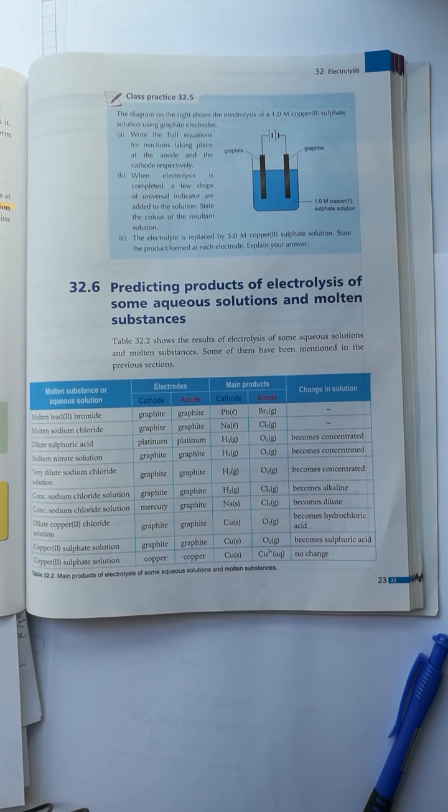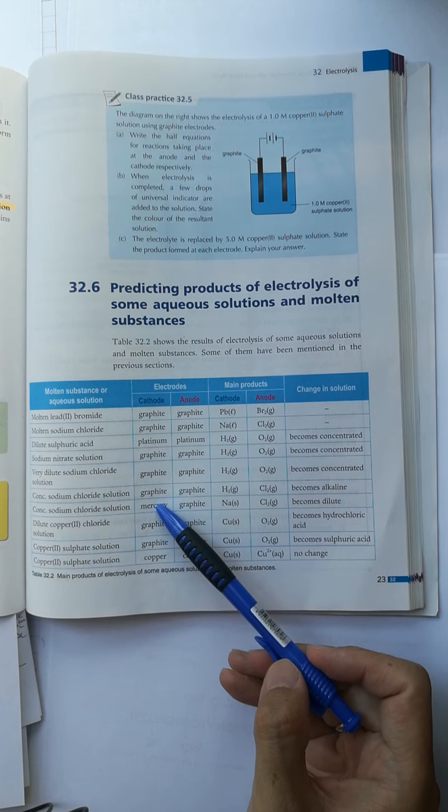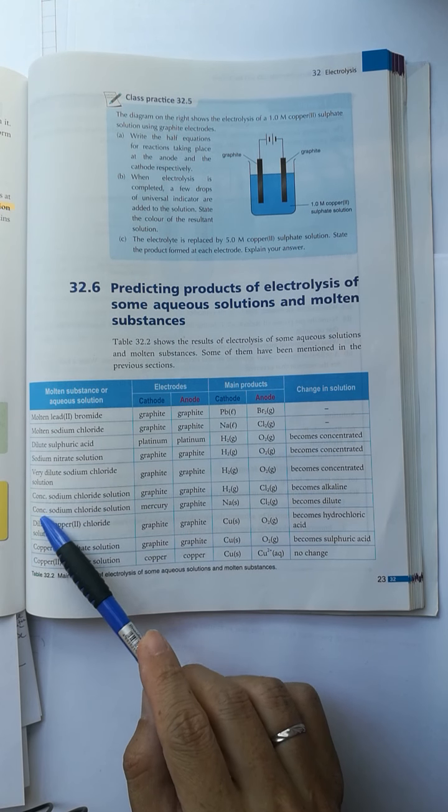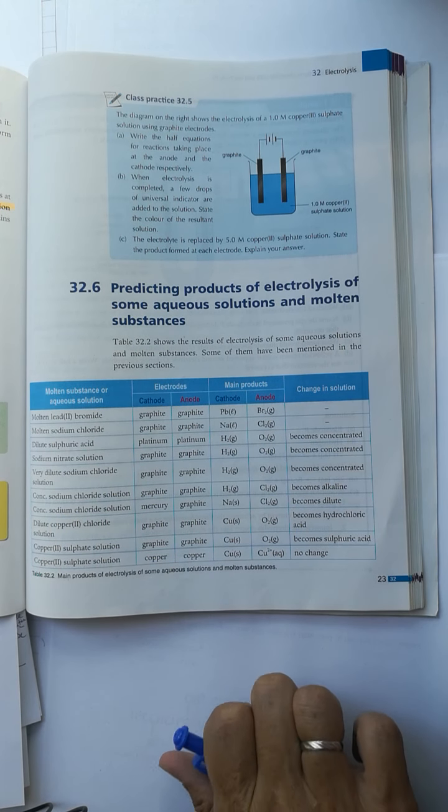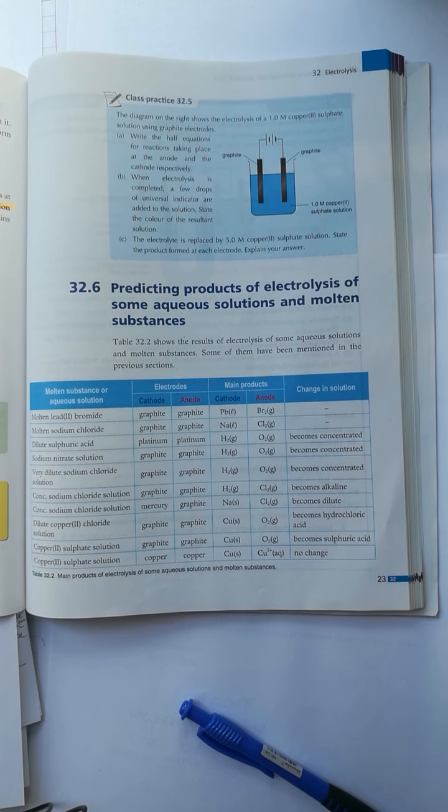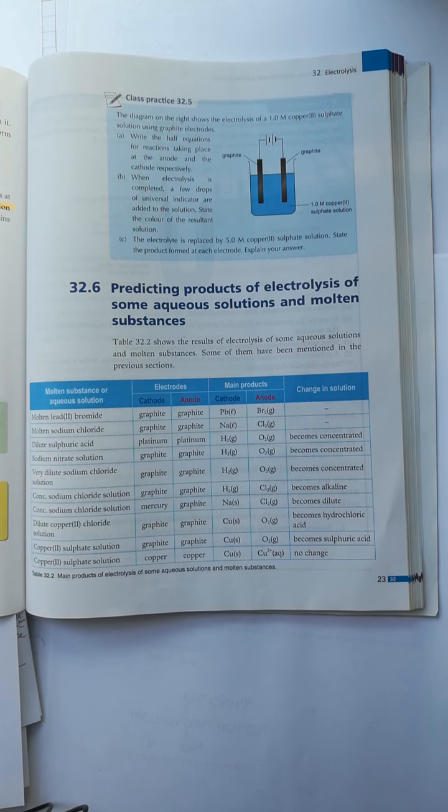After discussing the mercury electrode for concentrated sodium chloride solution electrolysis, we now consider copper(II) sulfate solution.